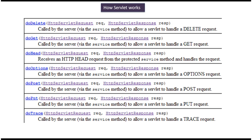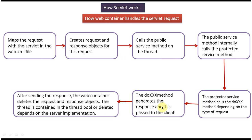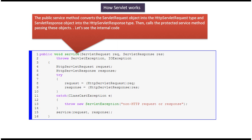The protected service method calls the corresponding doXxx method depending on the type of request: if the method type is GET it calls doGet, if DELETE it calls doDelete, if POST it calls doPost. There are seven do-methods in total. The doXxx method generates the response which is passed back to the client. After sending the response, the web container deletes the request and response objects, and the thread is returned to the thread pool or deleted depending on the server implementation.